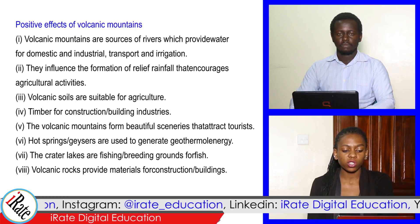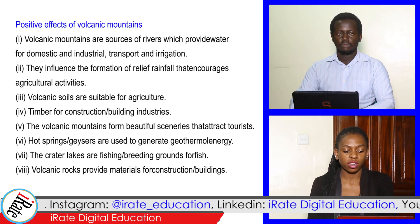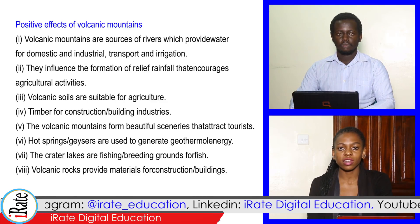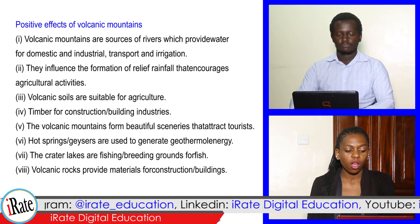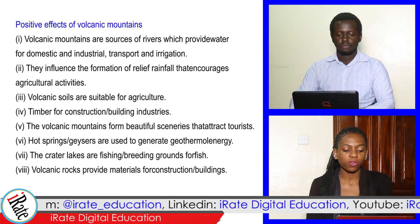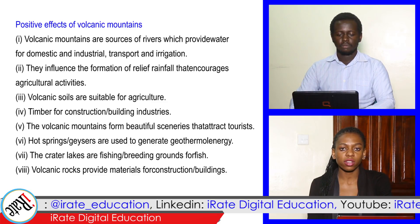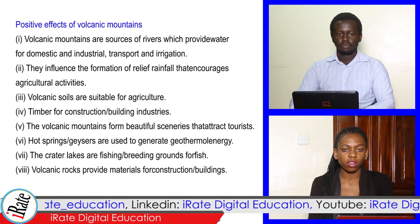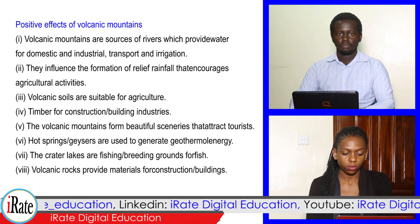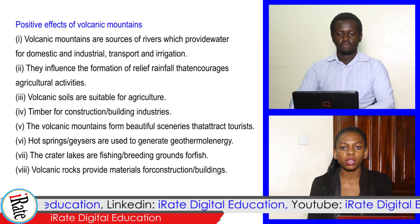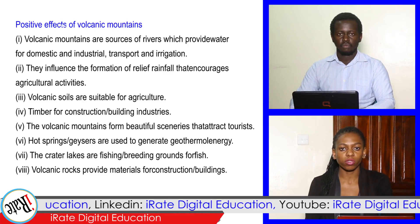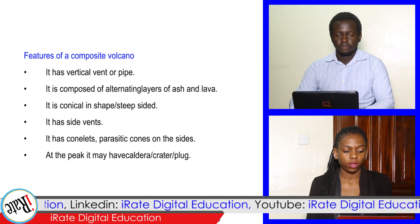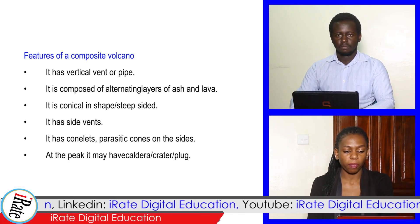Timber for construction or building industries. The volcanic mountains form beautiful sceneries that attract tourists. Hot springs or geysers are used to generate geothermal energy. The crater lakes are fishing or breeding grounds for fish. Volcanic rocks provide materials for construction or building. Features of a composite volcano include: it has a vertical vent or pipe.